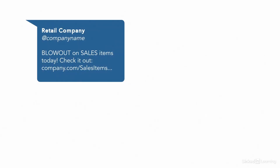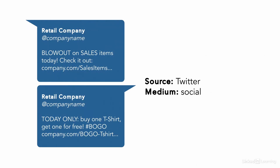Let's look at an example. Let's say that you have a marketing campaign with just one source — in this case, Twitter. How do we differentiate the traffic coming in from a tweet on sale items versus another tweet on a buy one get one free for t-shirts? Since the source is Twitter and the medium is social, there's no way to separate these two lines of traffic with just these two pieces of information. We don't want to stuff extra info into these fields, as that would cause problems when you want to look at all your social traffic grouped together.